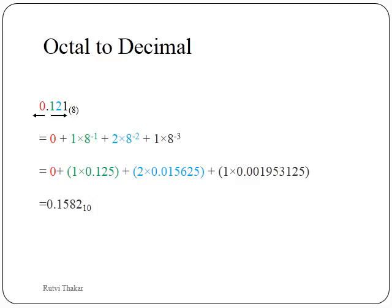Next is the conversion from octal to decimal. The octal number 0.121 is to be converted into decimal: we multiply by the negative powers of 8 starting from the digit next to the decimal point. So we have 1 × 8⁻¹ + 2 × 8⁻² + 1 × 8⁻³, which gives 1 × 0.125 + 2 × 0.015625 + 1 × 0.001953125. Adding all gives approximately 0.1582 in decimal, which is the equivalent of 0.121 octal.